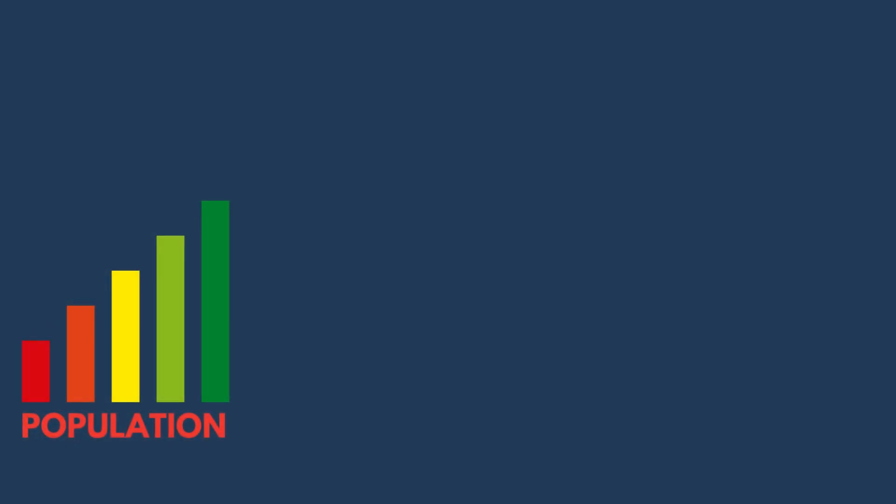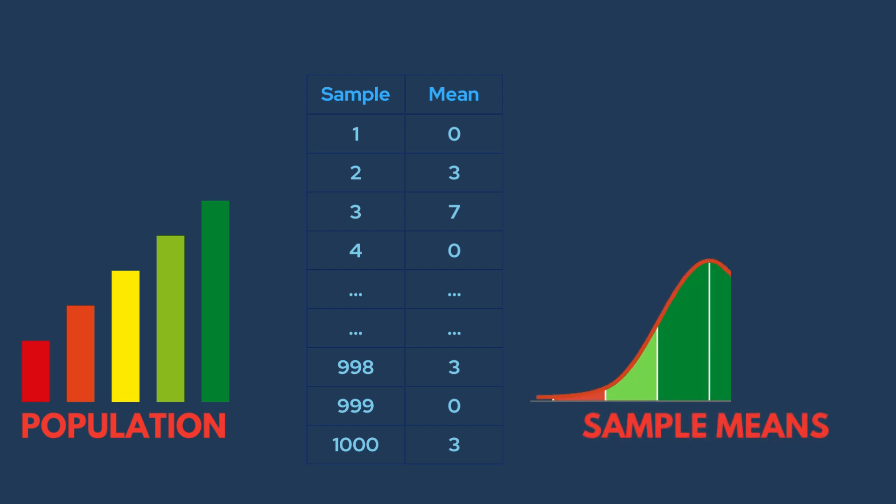The central limit theorem states that if we take many repeated samples from a population and calculate the average of each sample, the distribution of these sample means approaches a normal distribution. This happens regardless of the shape of the original population's distribution.